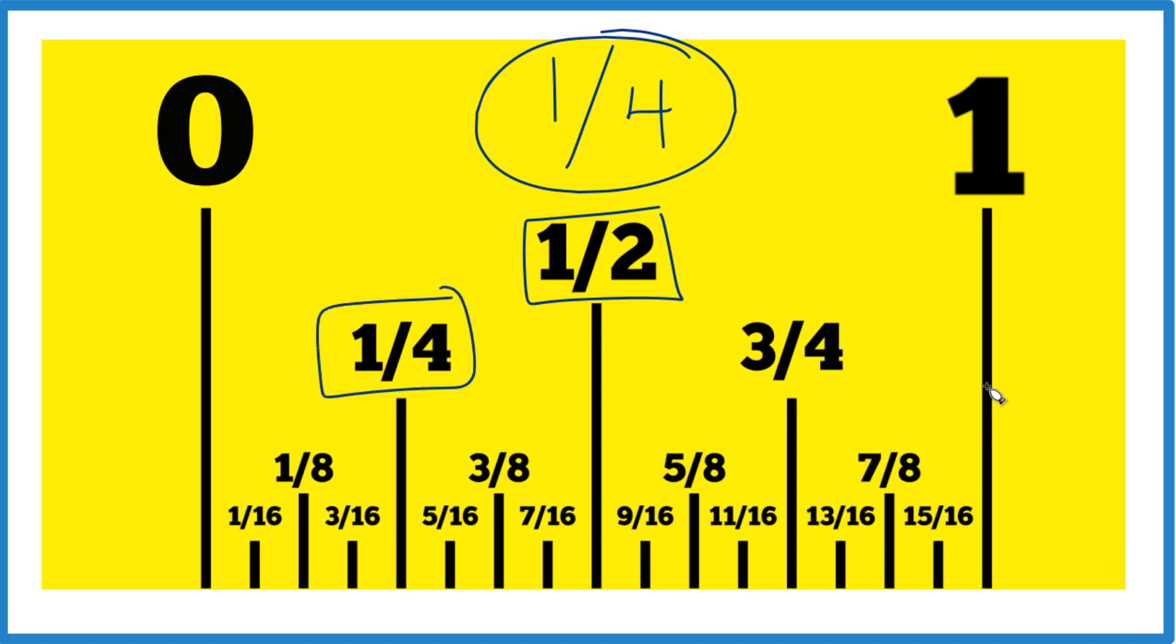That's one-fourth on this tape measure or this ruler here. So each one of these is one-fourth, so here's one-fourth, two-fourths, two divided by four, that's half, three-fourths, and then four-fourths, four divided by four, that gives you one.